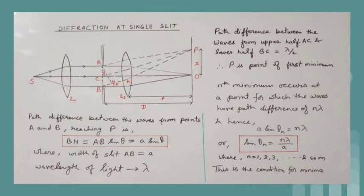When this path difference is equal to the wavelength of light, that is lambda, then there is a minimum intensity at point P, since the path difference between the waves from points A and C is also lambda by 2.